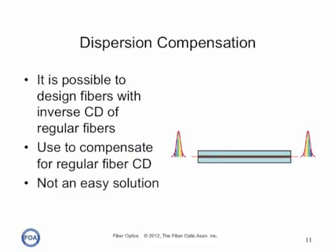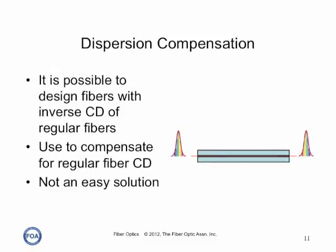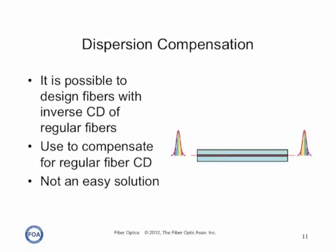The dispersion characteristics of a fiber can be manipulated by the materials and the design of the fiber. In fact, fibers can be made that have inverse chromatic dispersion to typical fibers and of a much higher magnitude. So a short length of these fibers can compensate for the chromatic dispersion in much longer lengths of regular fibers. These chromatic dispersion compensating fibers are typically used at a repeater or an optical amplifier to reverse the chromatic dispersion and allow longer lengths. You can also do the same with specialized optical components, but they tend to be much more expensive.